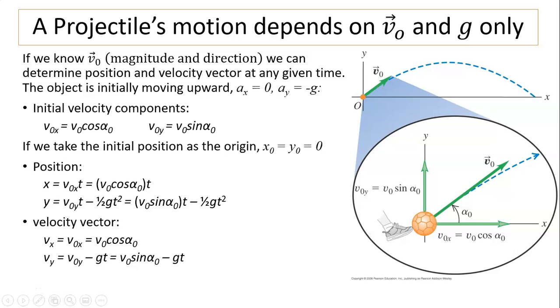A projectile's motion depends on v-naught and g only. So if we know v-naught, that means we know its magnitude and its direction alpha-naught. Then we can find its position at any time, we can find its velocity at any given time.